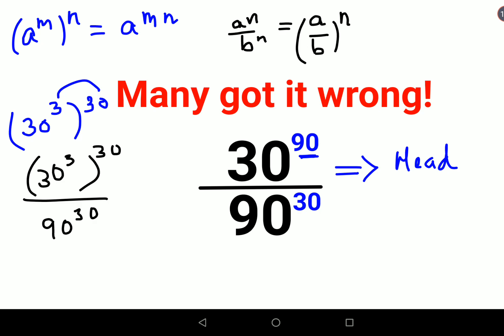So using this I can write this as 30 cube upon 90 the whole raised to 30. Now let's try and understand the working. 30 cube can be written as 30 into 30 into 30, and here this can be written as just 90. Everything is still raised to 30.